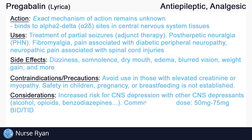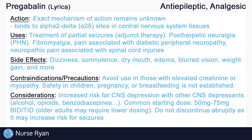Dosing often starts around 50 to 75 mg two or three times a day. Older adults may require lower dosing. As with most medications, do not discontinue pregabalin abruptly, but instead gradually taper the dose according to the provider's instructions. It may take over a week to taper off pregabalin safely to reduce the risk of rebounding and having seizures.